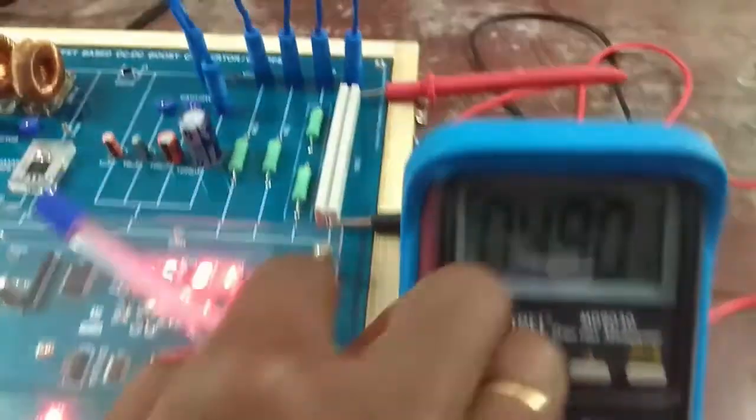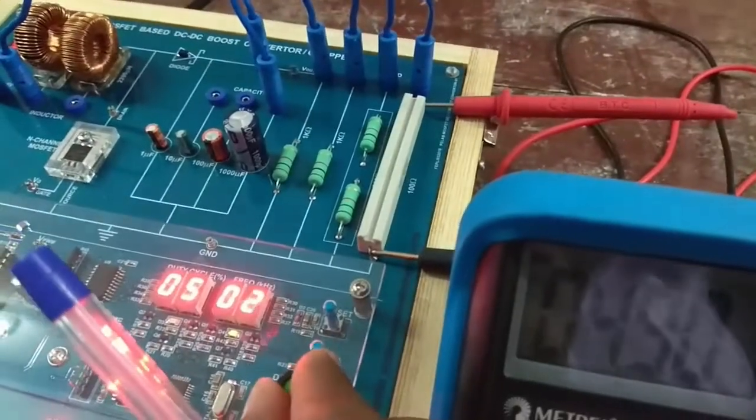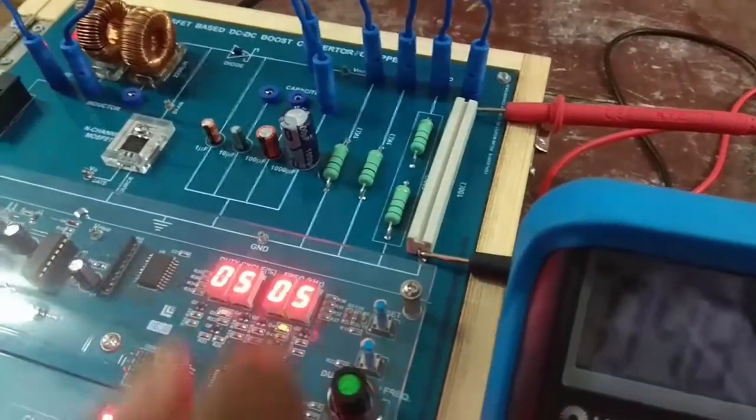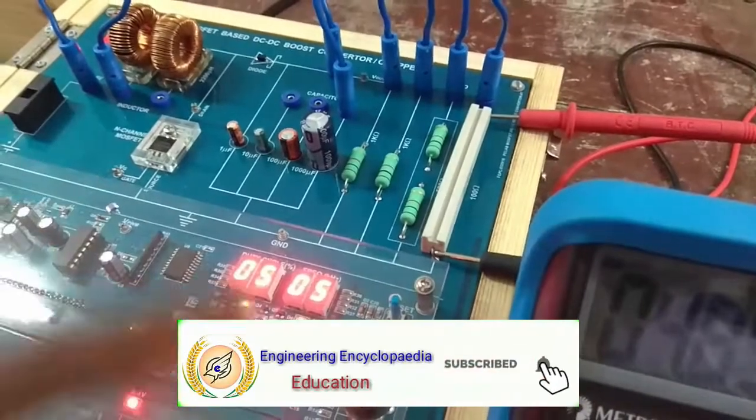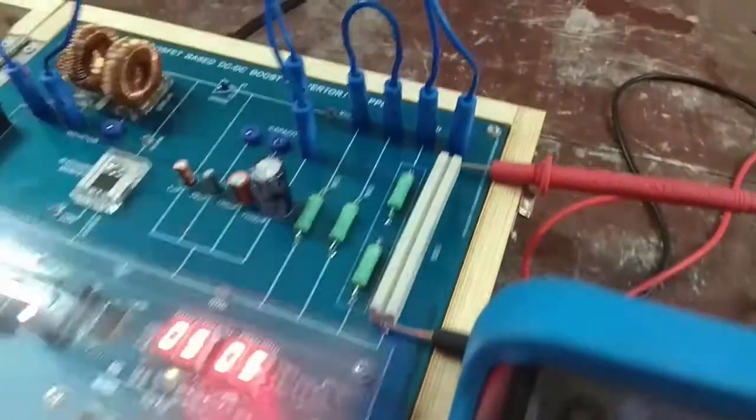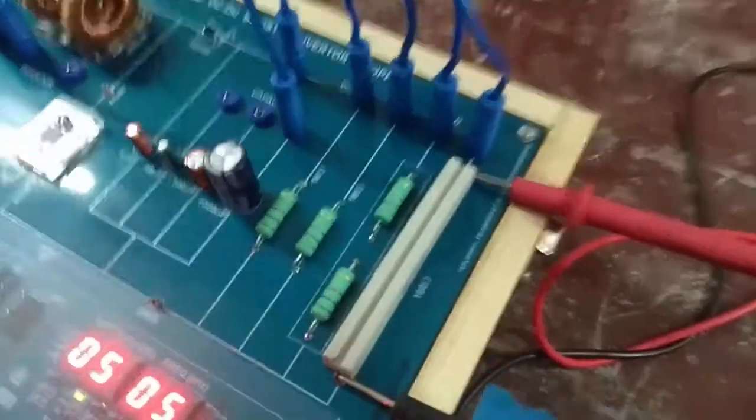Initially, I will fix some frequency, for example 5 Hz. Then I will vary the duty cycle. At the output, I have connected the multimeter, which displays the DC output voltage on this multimeter.